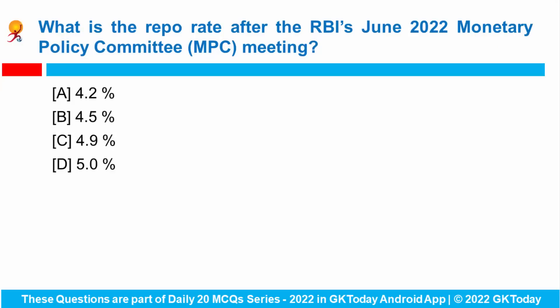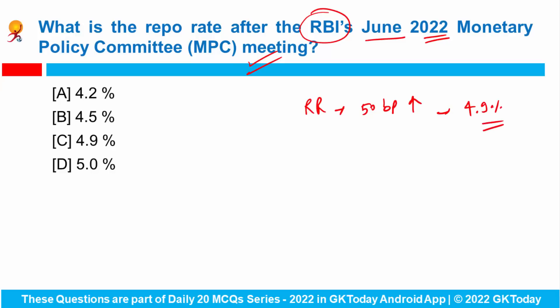First question: What is the repo rate after the Reserve Bank of India's June 2022 Monetary Policy Committee meeting? The Reserve Bank of India's Monetary Policy Committee has decided to increase the repo rate by 50 basis points. It will now be 4.9% following the June 2022 meeting.